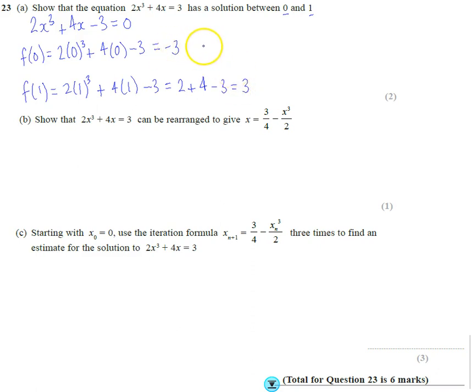So one of the answers is positive, one of the answers is negative. So a change of sign means we've gone from a negative number to a positive number, which means that there is a solution. We know it's between 0 and 1.